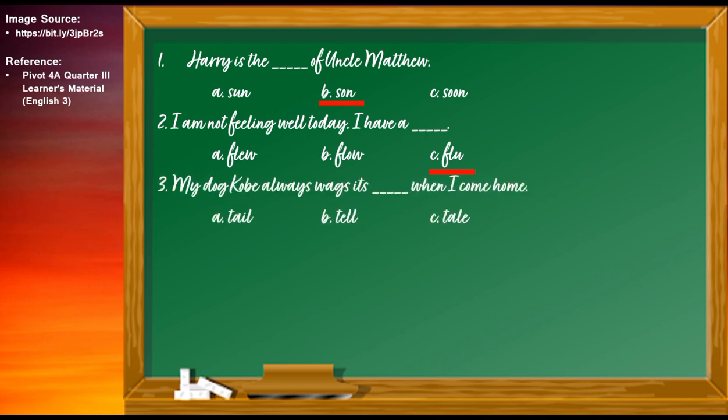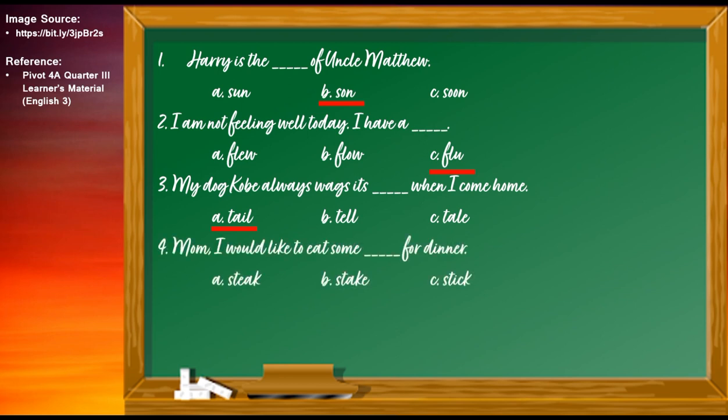Number three: My dog Kobe always wags its blank when I come home. The correct answer is LETTER A: My dog Kobe always wags its tail when I come home. Number four: Mom, I would like to eat some blank for dinner. The correct answer is LETTER A: Mom, I would like to eat some steak for dinner.